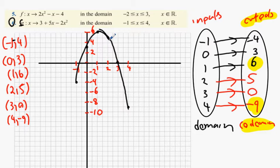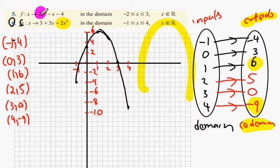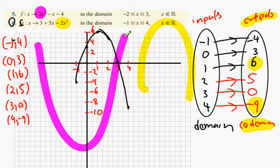You can see there that that's an n-shaped curve. What makes it an n-shaped curve — without even doing the calculator part — is when you have a minus x squared it's n-shaped, and when you have a positive x squared it's u-shaped.